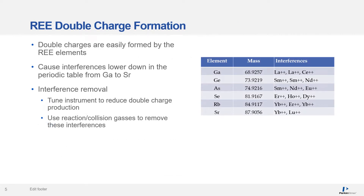Now let's talk about the problems with double charge formation from rare earth elements. As rare earth elements double charge very easily and the ICP-MS measures a mass to charge ratio, when we double charge we start causing problems further down the periodic table from gallium to strontium. Some of the double charges from rare earth elements will cause problems with elements already difficult to measure such as arsenic and selenium. To deal with this we need to tune the instrument to reduce double charge formation and then use reaction or collision cell gases to remove these interferences.